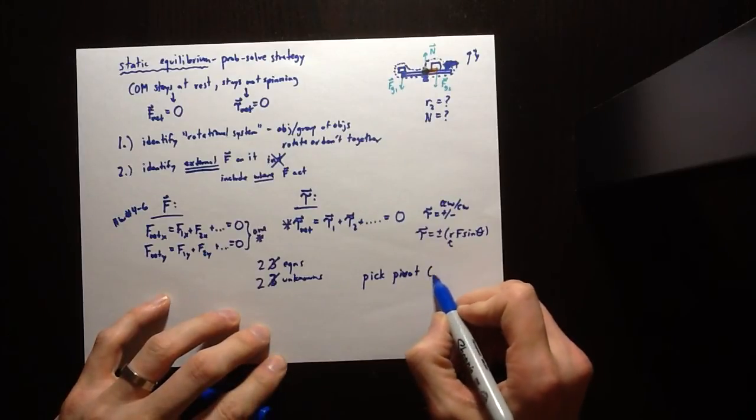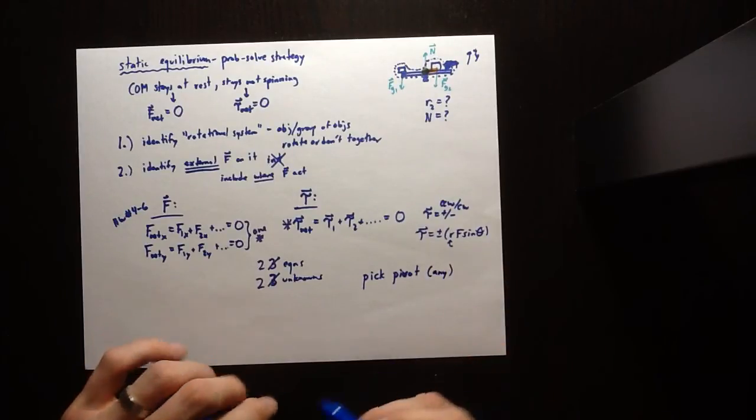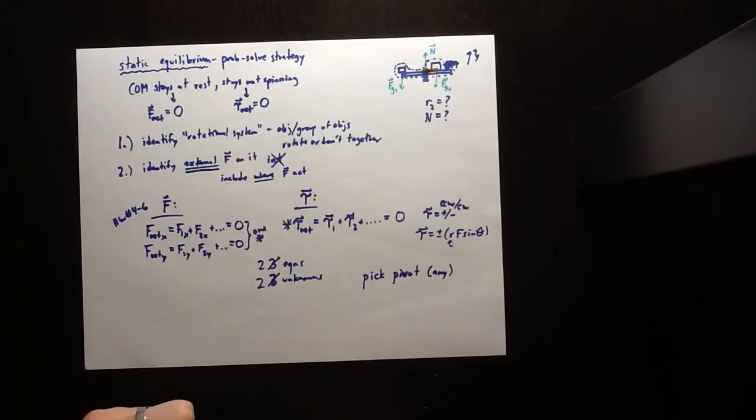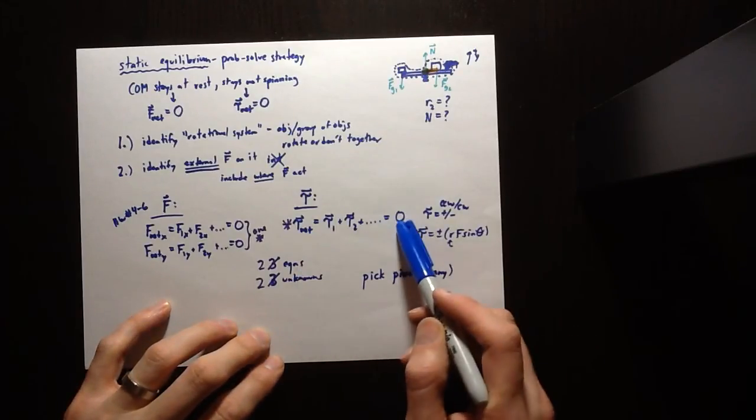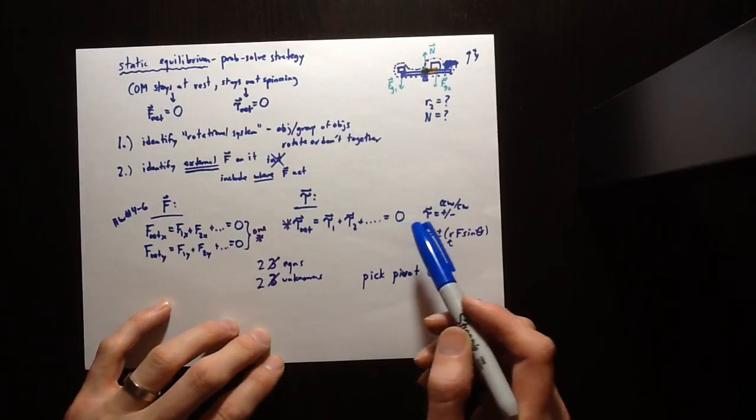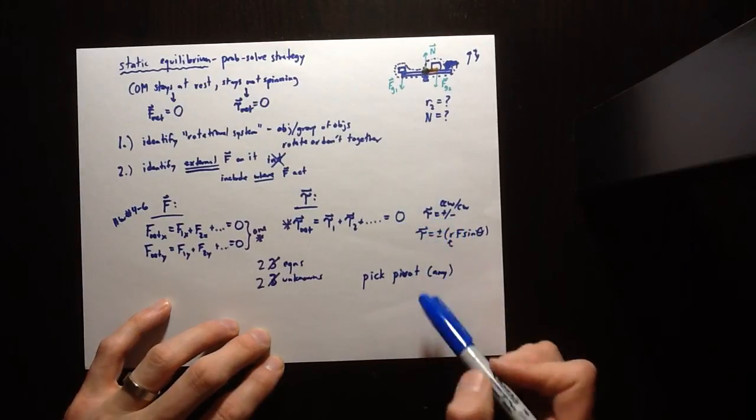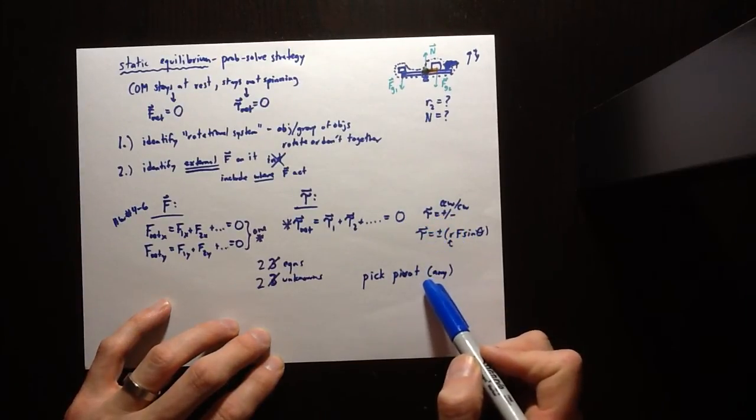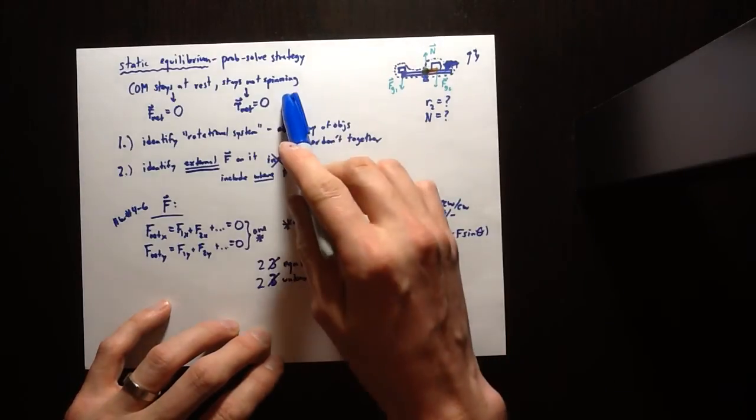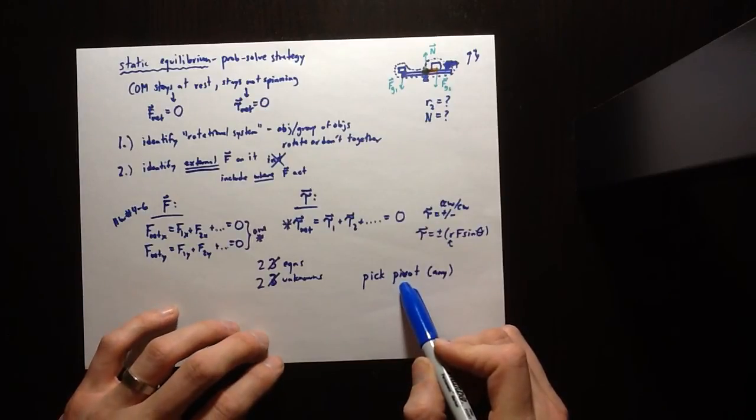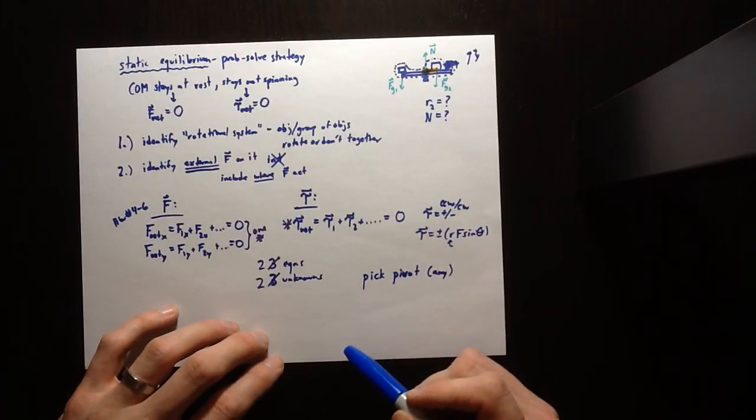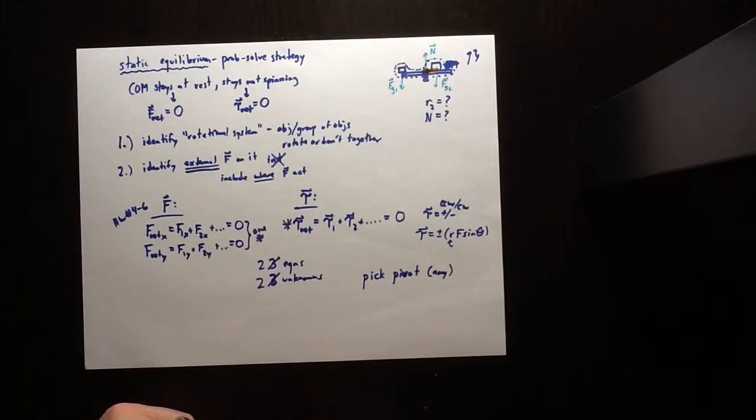So it turns out that as far as picking a pivot, you can pick any pivot. So any pivot you pick, if there's no net torque around it, then the thing is staying put. And if you picked another pivot, you can't get a different result. It either is spinning or not spinning. So as long as it's not actually spinning, you can pick any pivot you want. So that seems kind of a little bit strange.